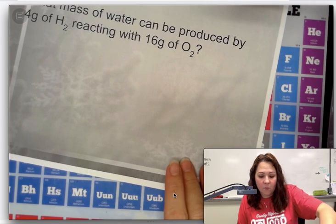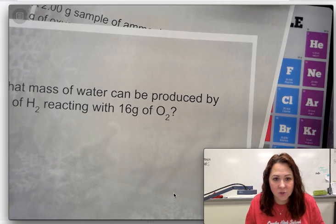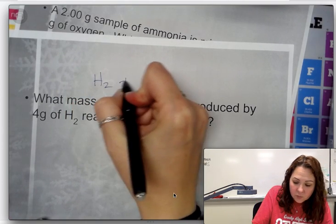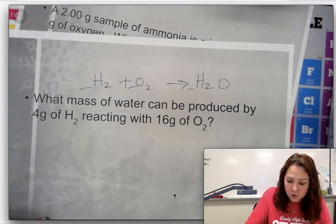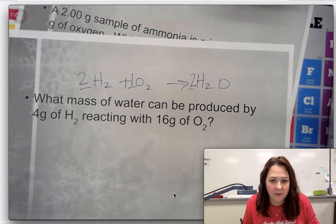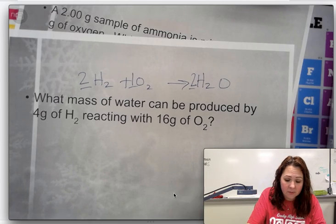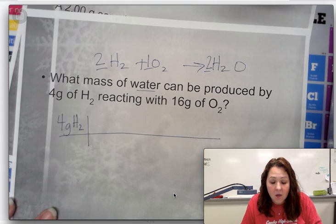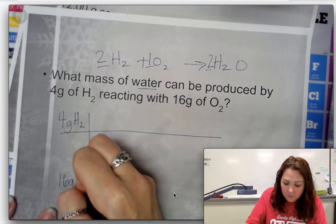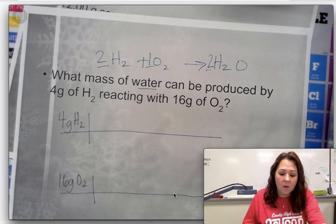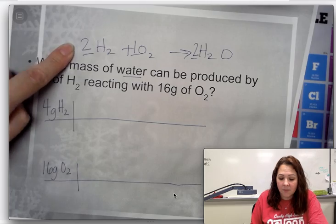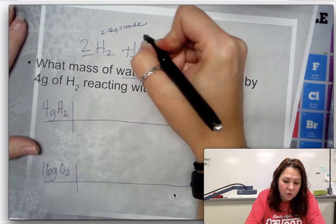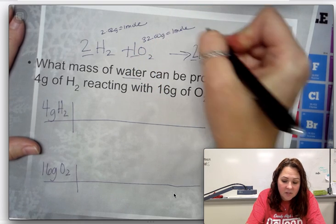The next problem says: what mass of water can be produced by 4 grams of hydrogen reacting with 16 grams of oxygen? We need a balanced reaction. Hydrogen reacting with oxygen makes water: 2H₂ + 1O₂ → 2H₂O. We typically write in that number 1. You're going to set up two gram-to-gram problems. The molar masses you'll need: hydrogen is 2.02 g/mol, oxygen is 32 g/mol, and water is 18.02 g/mol.